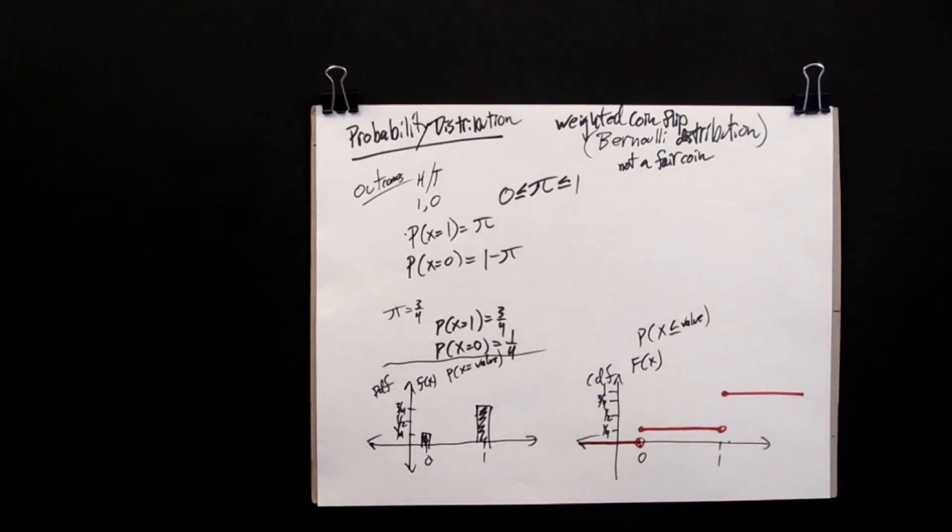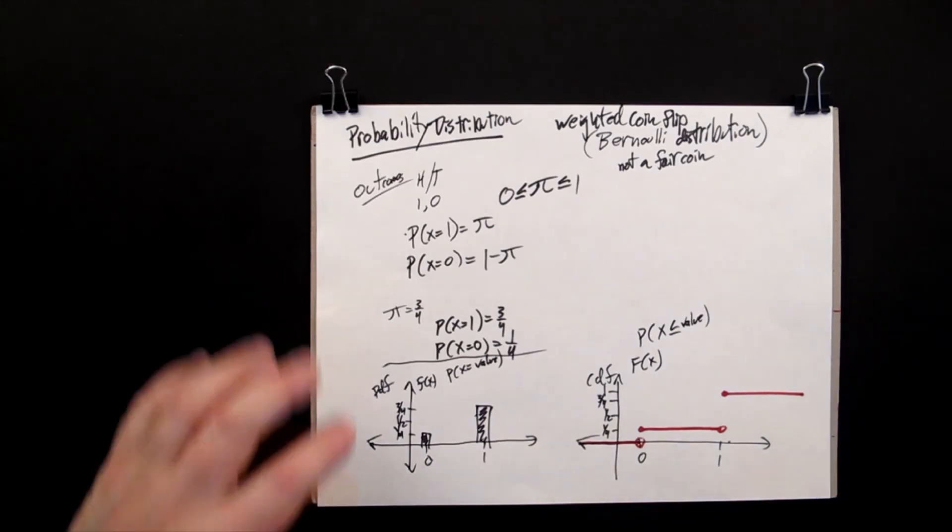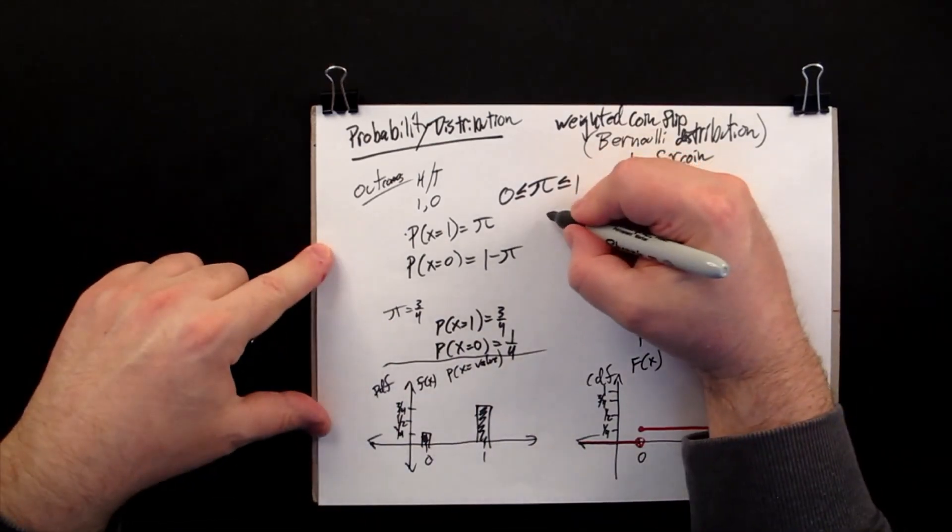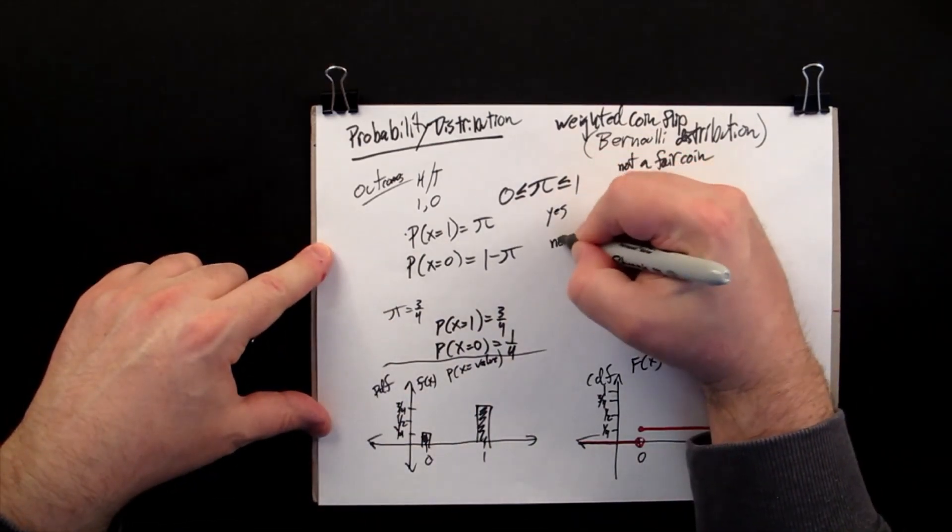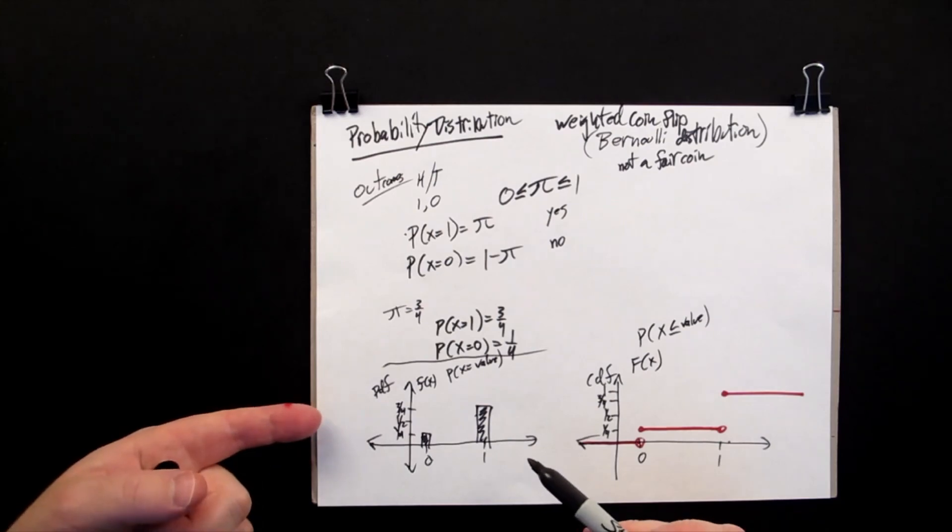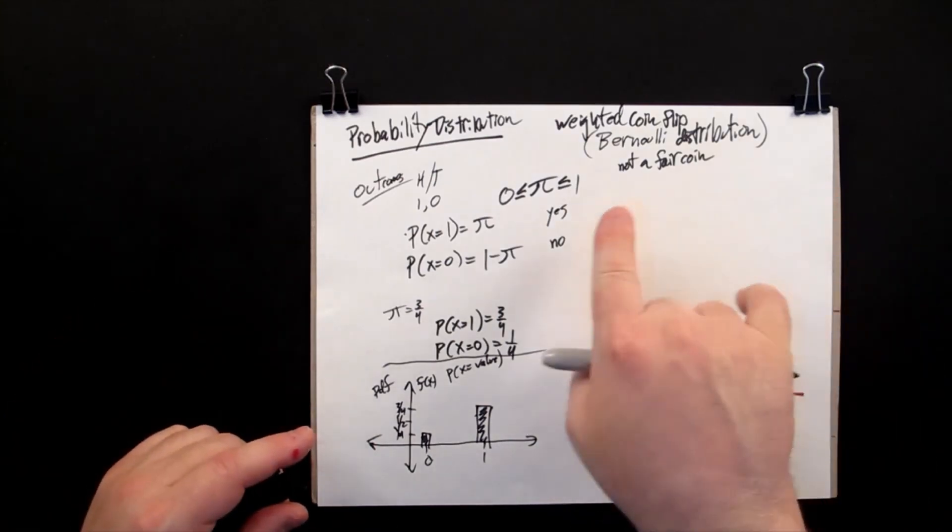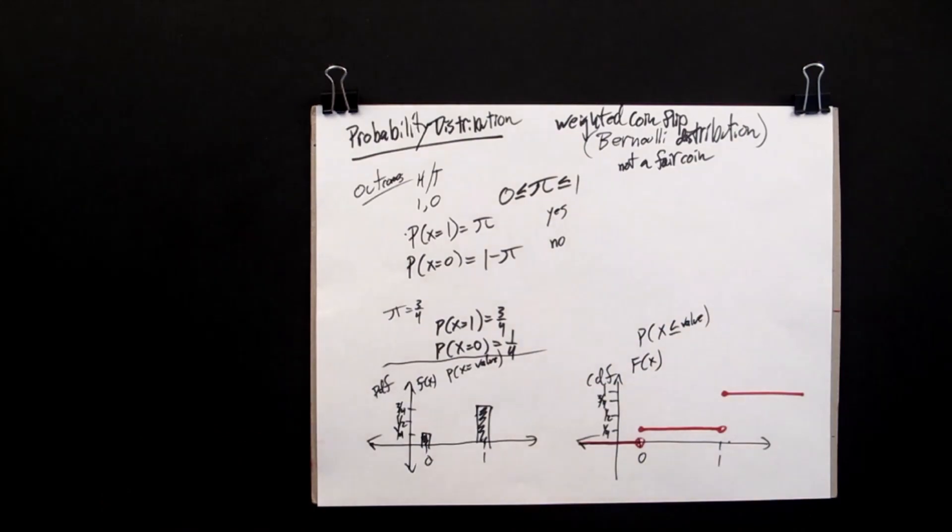This distribution seems really simple, and it is, but it's also very useful because there's more difficult probabilities, and if you can phrase it as a yes-no question, then you can suddenly describe it using a weighted coin flip instead of something more difficult to work with. So this ends up being a very useful distribution to understand.